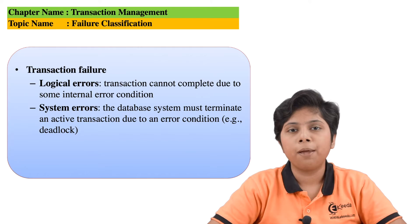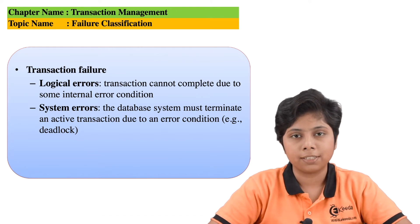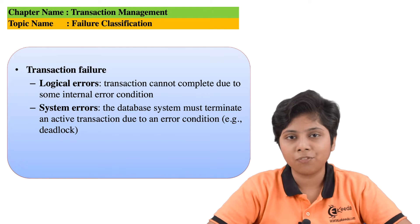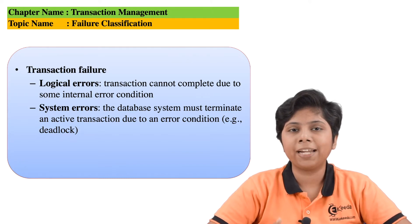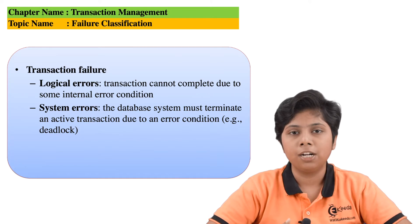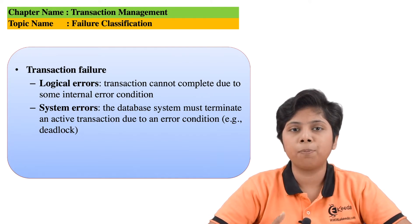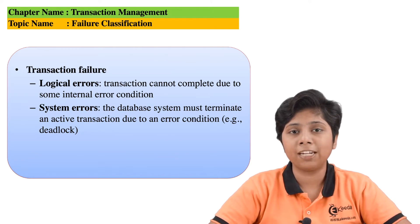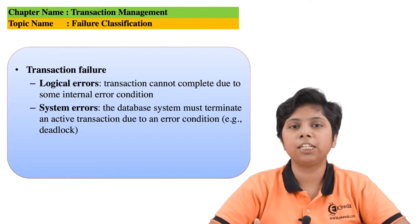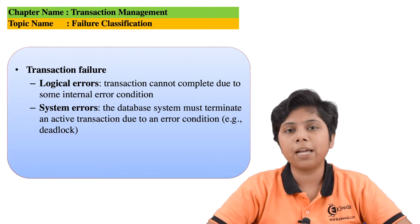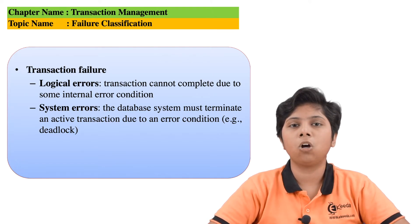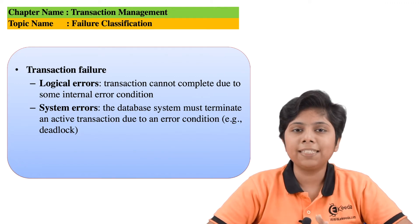The first classification is transaction failure. A transaction can fail its normal execution by the following methods. The first is a logical error — this occurs when the transaction has started execution but there is bad input, a logical error like bad input, or partial exhaustion of resources, meaning the transaction does not have sufficient data to continue its operation.